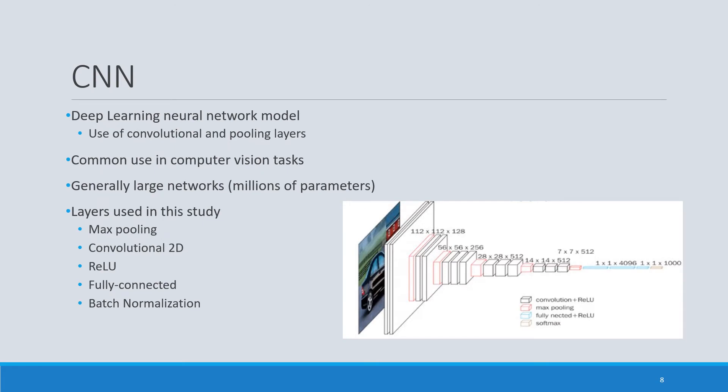Now we're going to talk about the convolutional neural networks used in this analysis. Here we see an image representing a convolutional neural network, which in this case has convolutional layers, fully-connected layers, and a softmax layer. These neural networks are part of the deep learning family and are distinguished by their use of convolutional and pooling layers. They are very common in computer vision tasks such as image recognition and object detection, and are generally very large compared to simpler feed-forward neural networks. In this study, we include max pooling, convolutional 2D, ReLU, fully-connected, and batch normalization layers.